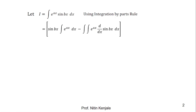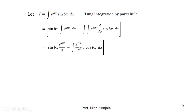Now simplifying this in the next step: we have sin(bx) as it is, integration of e raised to ax is e raised to ax upon a, minus the outside integral into e raised to ax upon a times the derivative of sin(bx), which is b·cos(bx) dx. Now to evaluate this integral — that is, the integral of e raised to ax times cos(bx) dx — we will apply the integration by parts rule once more.